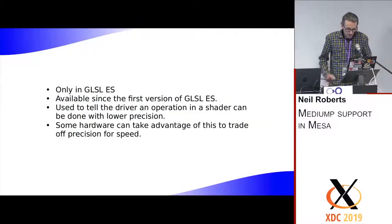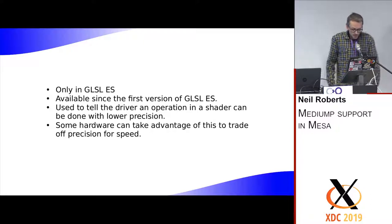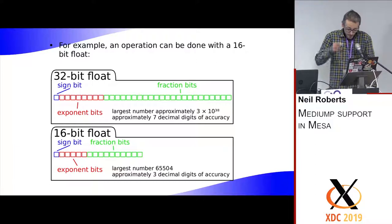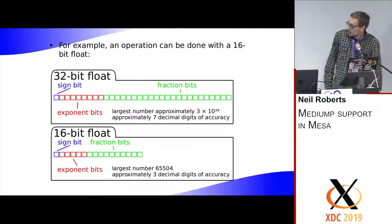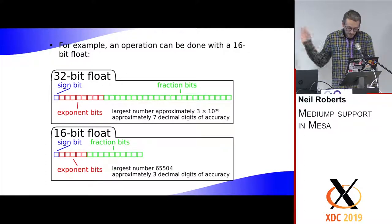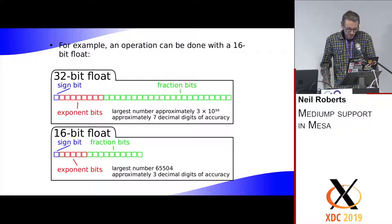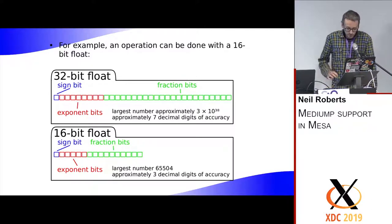Mediump is part of GLSL ES. It's been available in GLSL ES since the first version. It's a way for an application to tell the driver that a particular operation in a shader can be done with a lower precision than normal. Some hardware can take advantage of this to trade off precision for speed. For example, you can have 32-bit floats with a huge range up to 10^38 and about seven digits of accuracy. On some hardware, you can use 16-bit floats as a trade-off — the operation is faster, but you only have about three decimal digits of accuracy and the maximum storable number is only about 65,000.